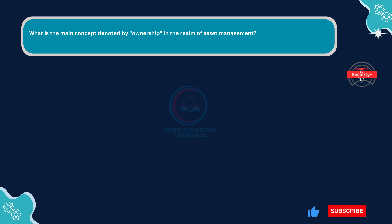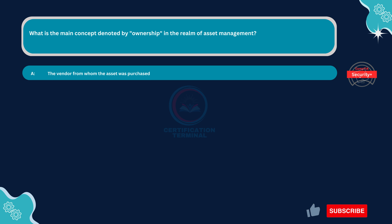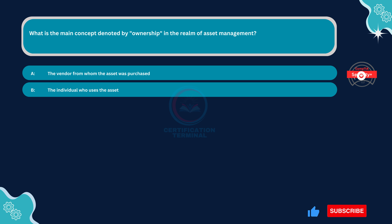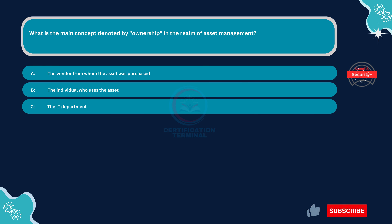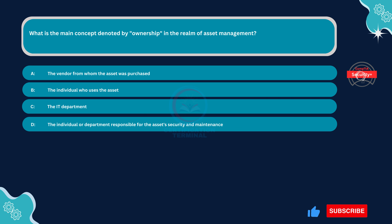Next question. What is the main concept denoted by ownership in the realm of asset management? Option A, the vendor from whom the asset was purchased. Option B, the individual who uses the asset. Option C, the IT department. Option D, the individual or department responsible for the asset's security and maintenance.